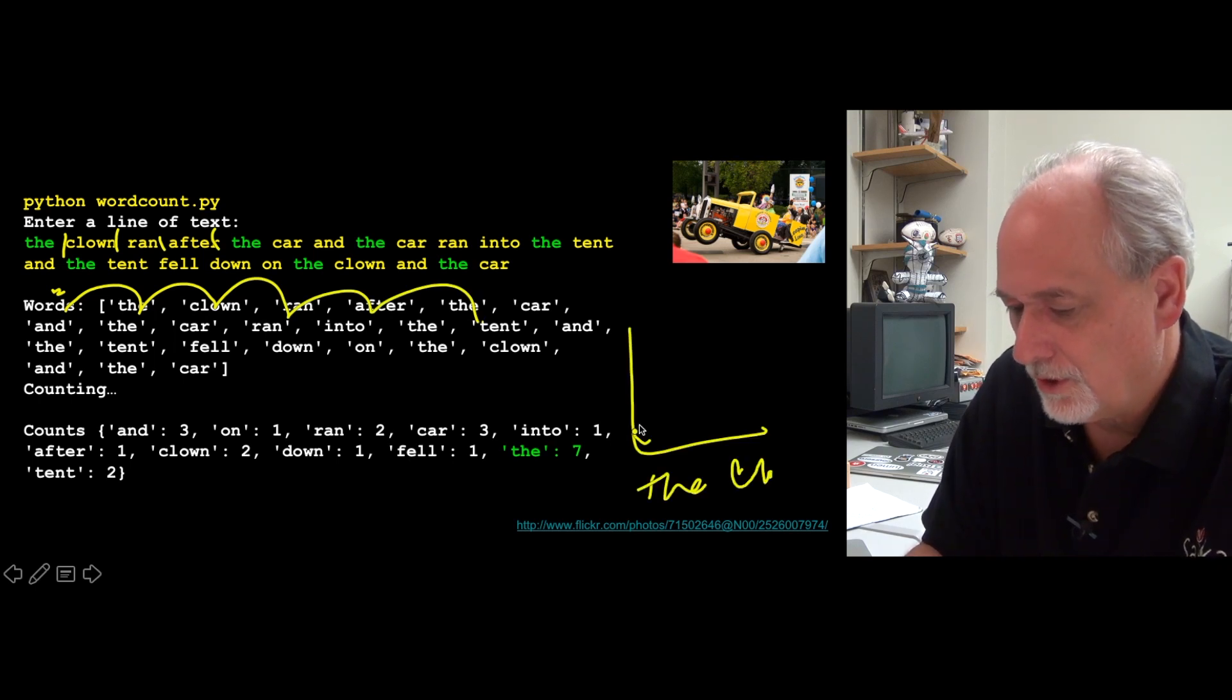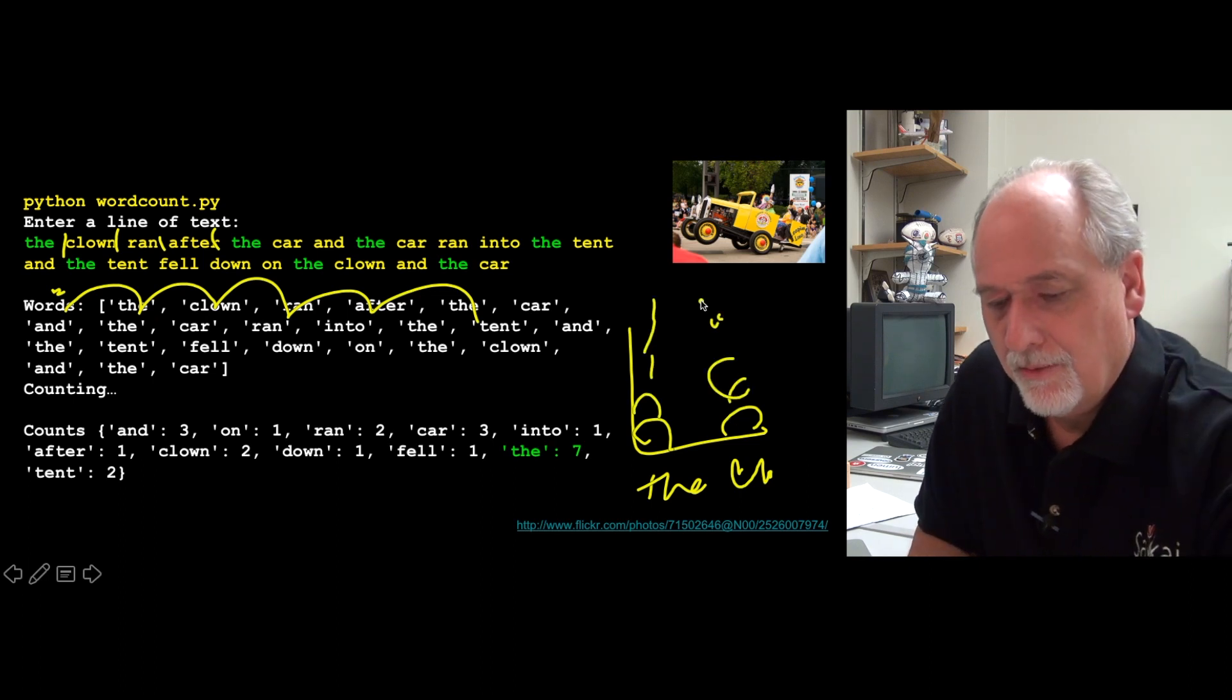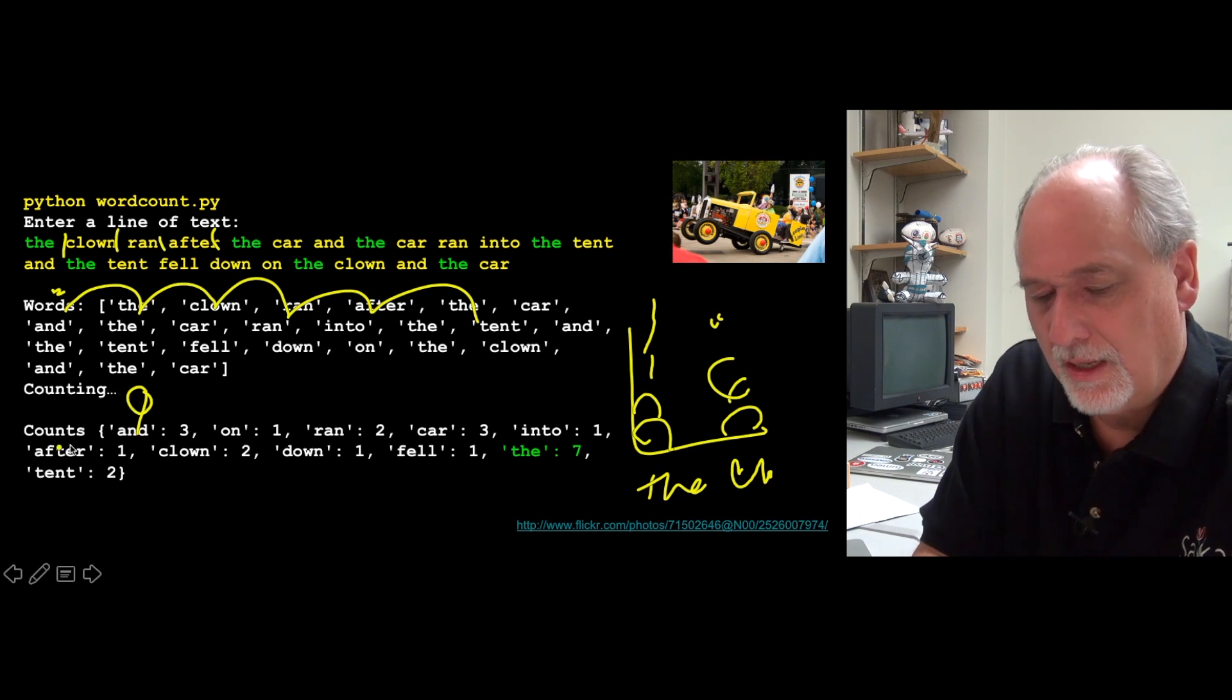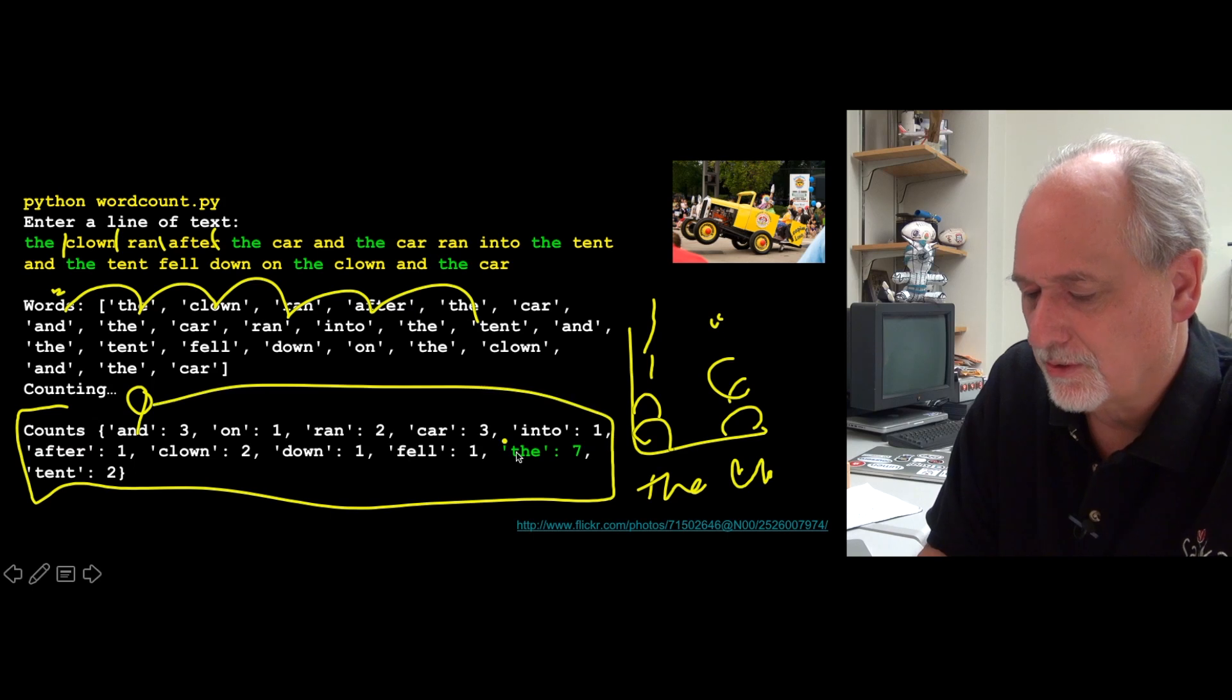And it's going to build a histogram, the, clown, you know, one, clown, the, up, up, up. These things are going to go up, right? That's this histogram and then when it's all said and done, we end up with the histogram. And so counts is the dictionary that ends up with the histogram.